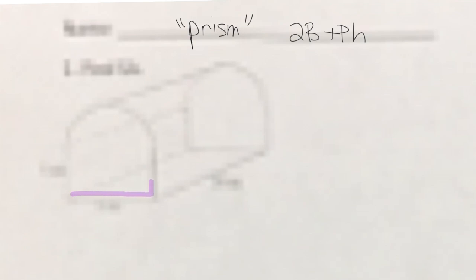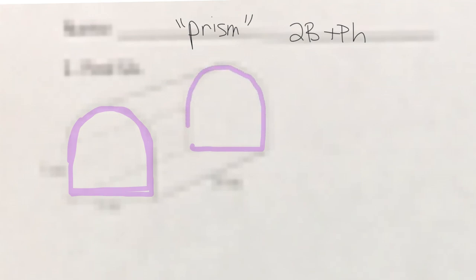For the composite surface area problems closer to number 12, you have to decide whether the shape is a prism. If it is, use the traditional 2B plus PH formula. You know it's a prism when there are two of the exact same shape making up the bases. This composite has an irregular curved shape — there are two of them — so it is a prism. We need to find the base area and the base perimeter.